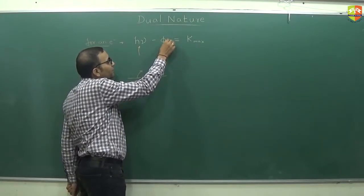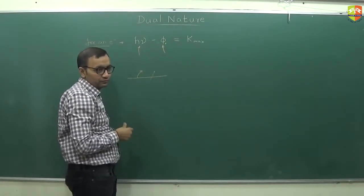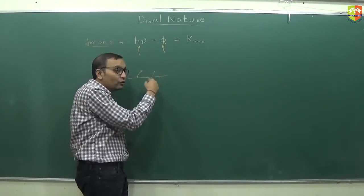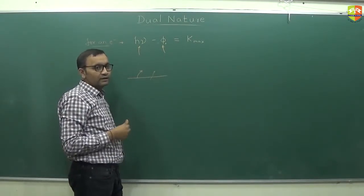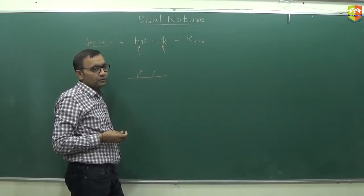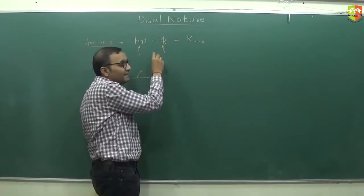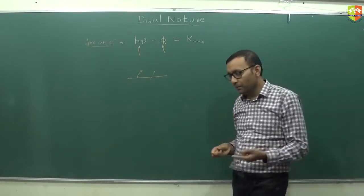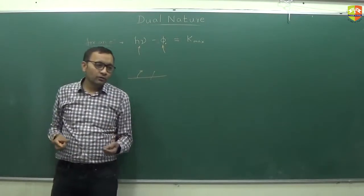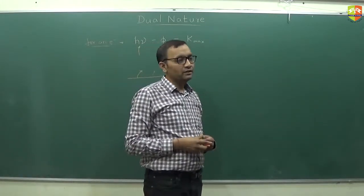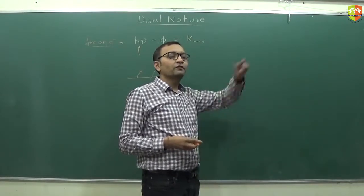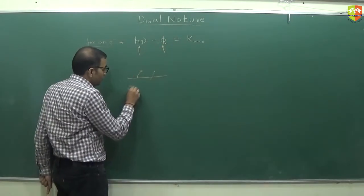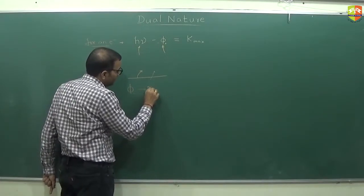So this thing will keep on varying for different kinds of electron. The minimum value of this, the minimum threshold value for any electron to come out is called the work function of the metal. Usually in the equation phi naught is referred as work function.